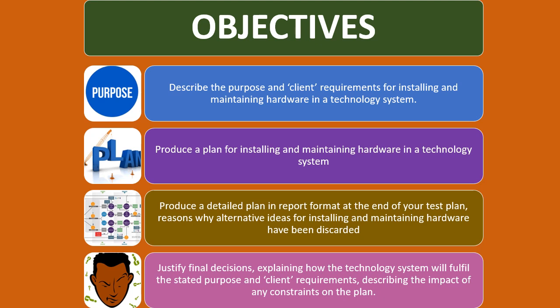For the D section, the distinction section, you will need to write up a justification of the final decisions you have made. You can explain how the technology system will fulfill the stated purpose and client requirements. You will also describe the impact of any constraints on the plan.